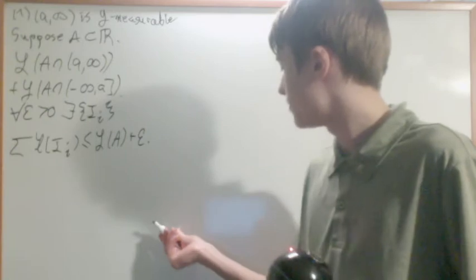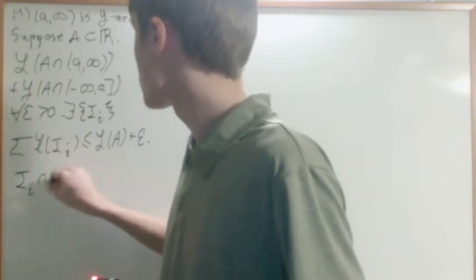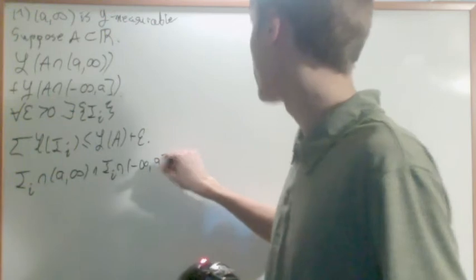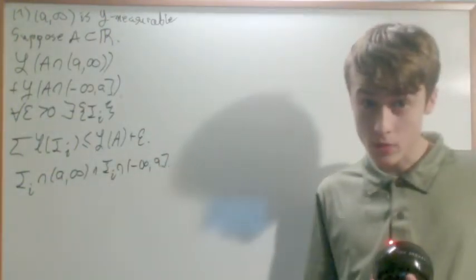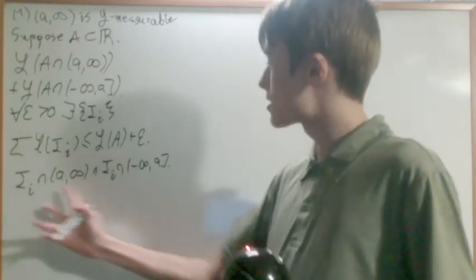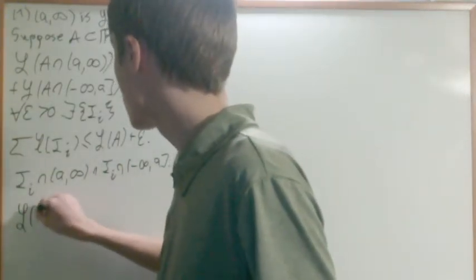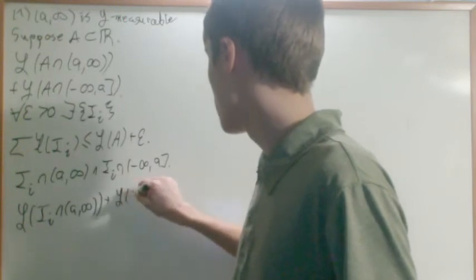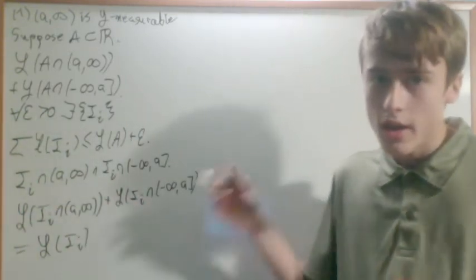I'll define two sets: I_i intersect [a, ∞) and I_i intersect (-∞, a]. These are still intervals, which is very nice and useful. It's easy to see that both are subsets of I_i and that they are complements of each other. So the Lebesgue measure of I_i ∩ [a, ∞) plus the Lebesgue measure of I_i ∩ (-∞, a] equals the Lebesgue measure of I_i, and I can replace all of those with lengths since the Lebesgue measure equals the length for intervals.